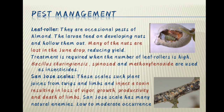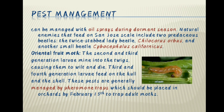San Jose scales suck plant juices from twigs and limbs and inject a toxin resulting in loss of vigor, growth, productivity and death of limbs. San Jose scale has many natural enemies. Low to moderate occurrence can be managed with oil sprays during the dormant season. Natural enemies include two predaceous beetles: the twig-stabbed lady beetle Chilocorus orbus and another small beetle Psychocephalus californicus. Oriental fruit moth: the second and third generation larvae mine into the twigs causing them to wilt and die. Third and fourth generation larvae feed on the hull and the shell. These pests are generally managed by pheromone traps, which should be placed in orchards by February 15th to trap adult moths.